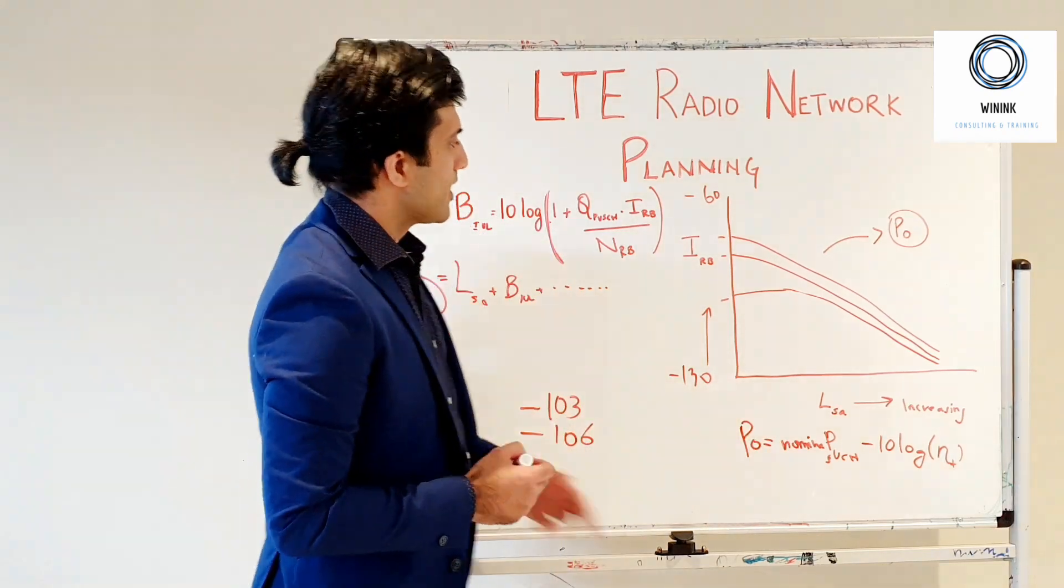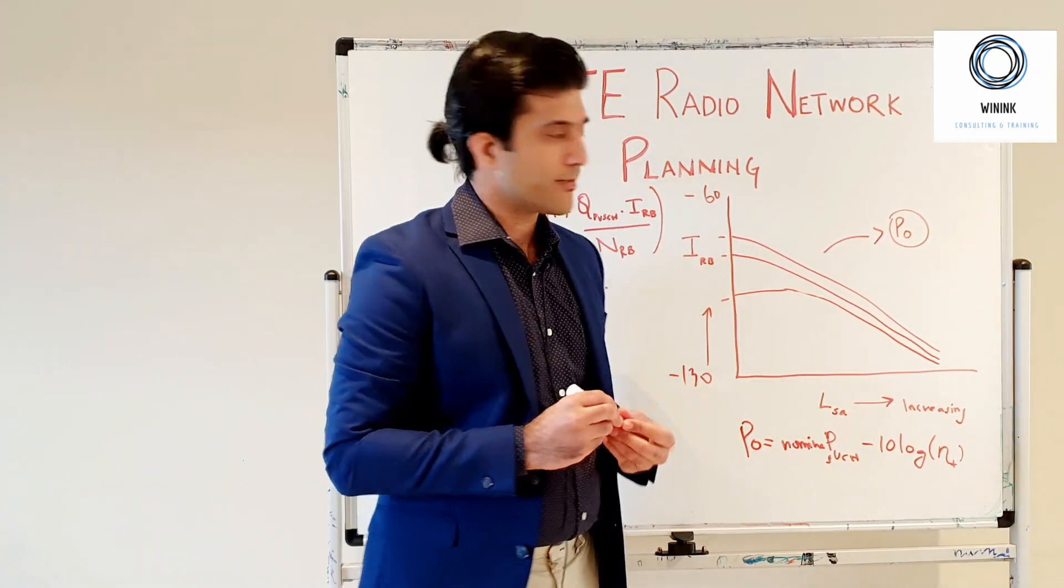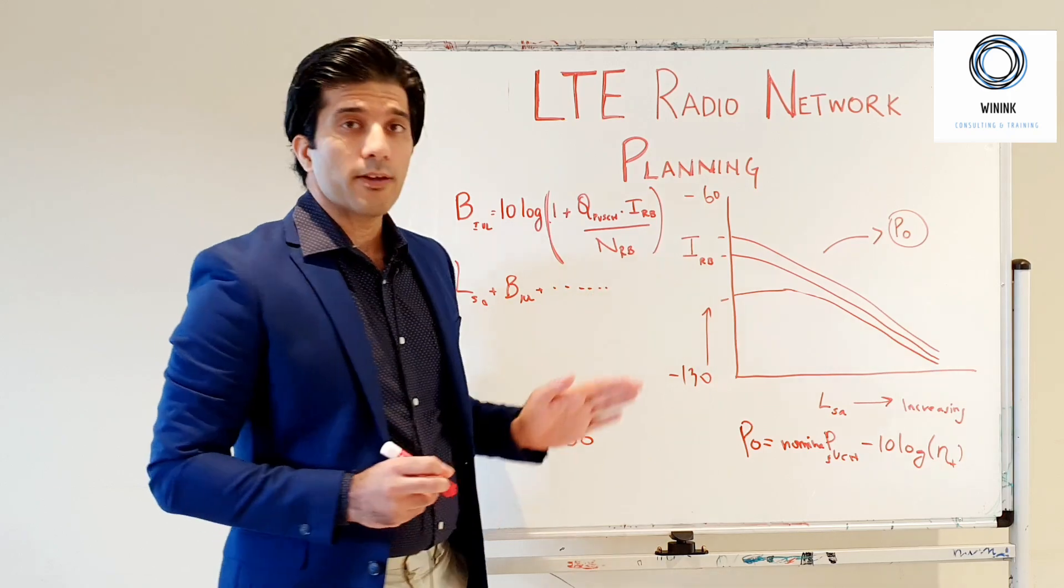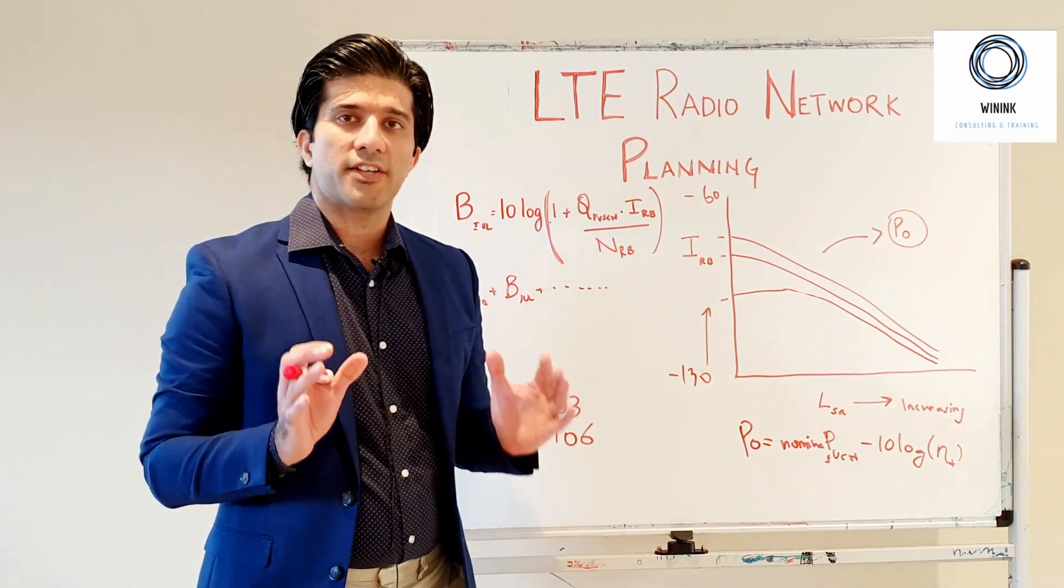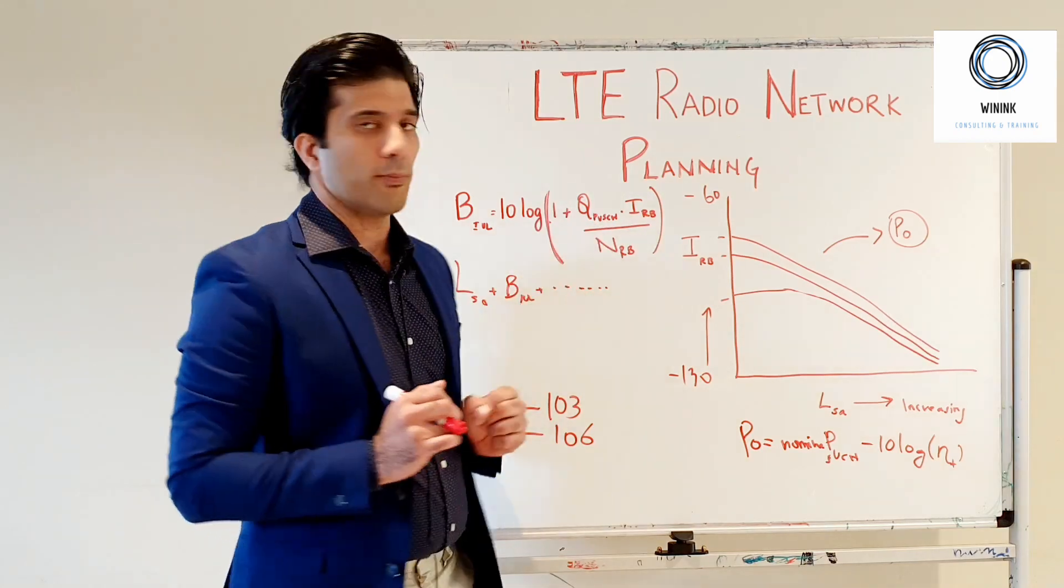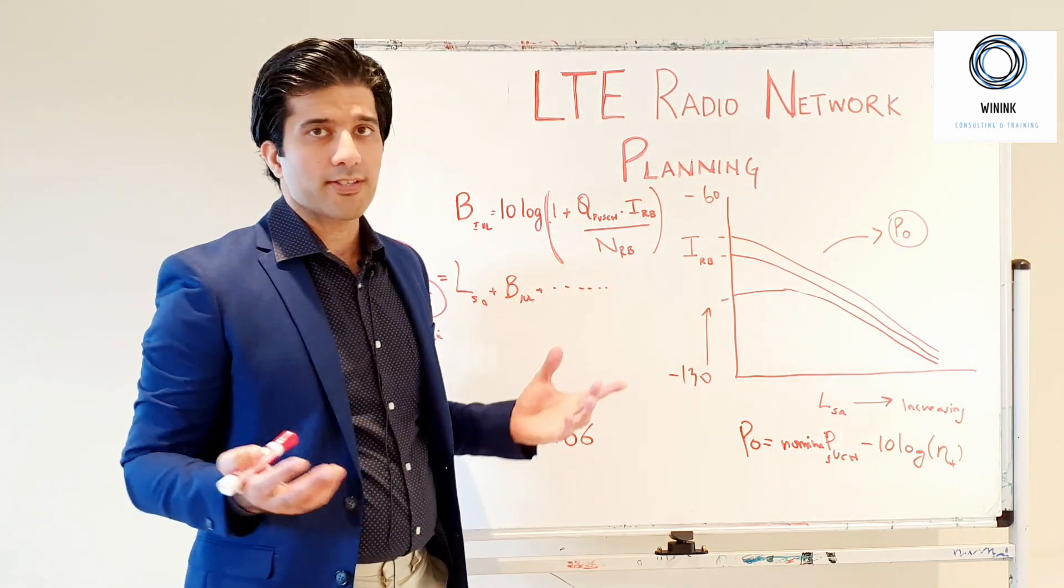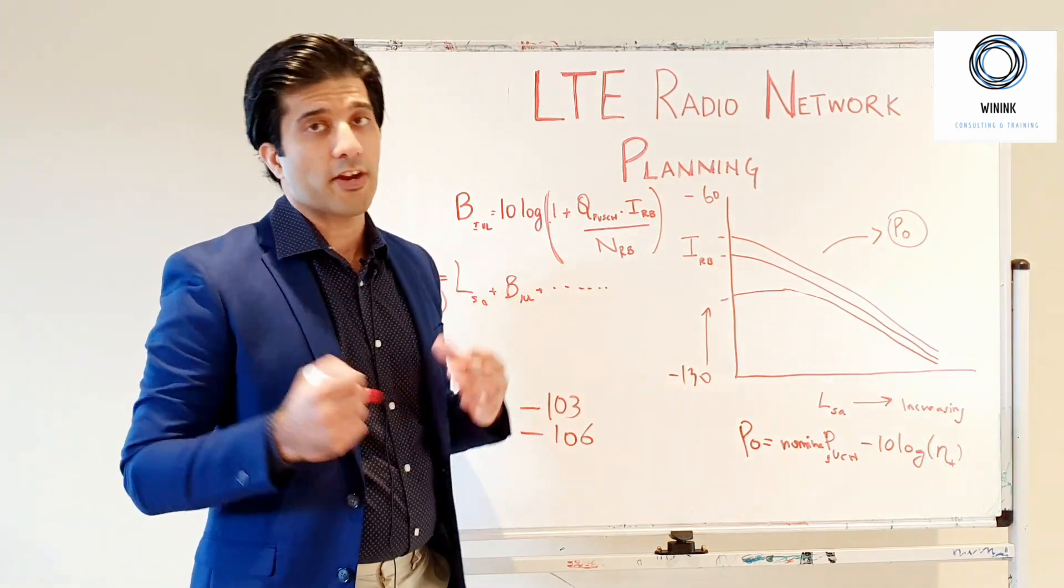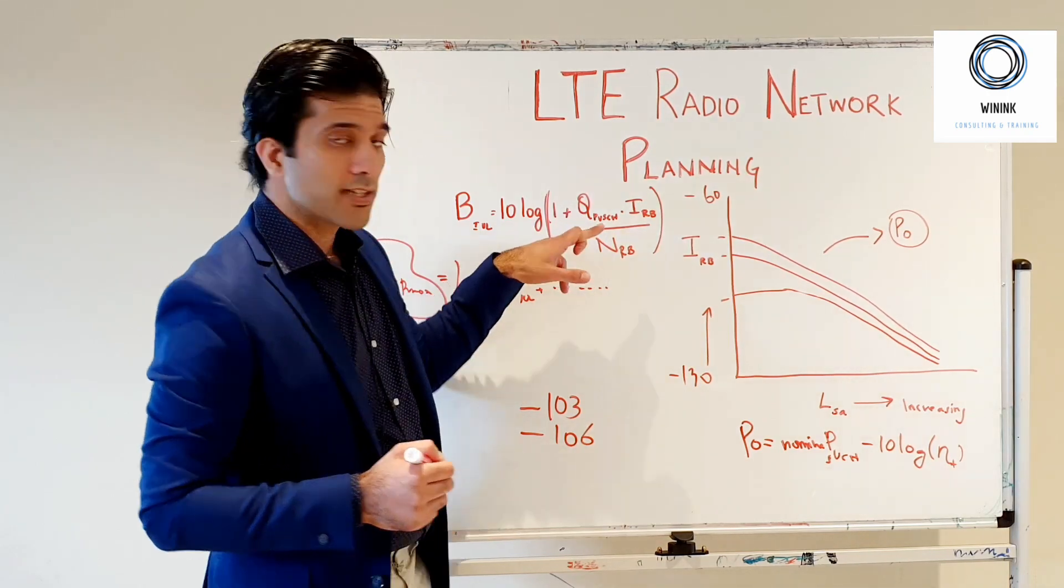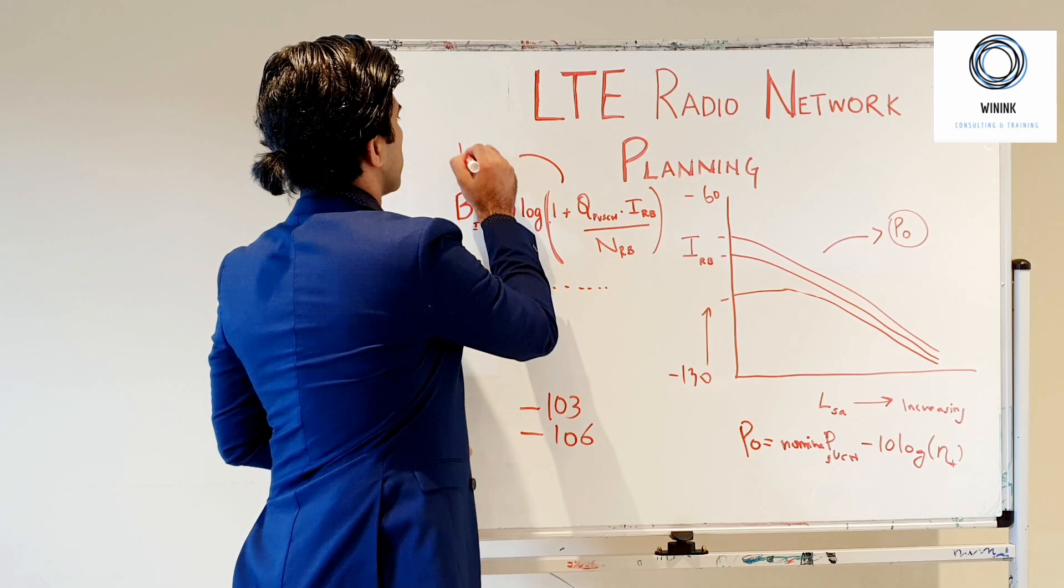What is this curve showing? This curve in this direction is your cell range. In this direction it is I_RB, and I_RB is the intercell interference factor which you have to incorporate in this formula. Then this N_RB is your thermal noise. Thermal noise can be calculated by another formula but we are not discussing it here.